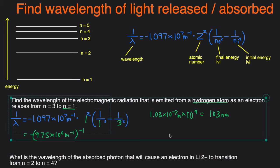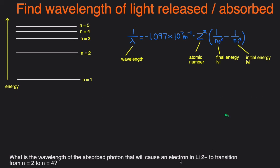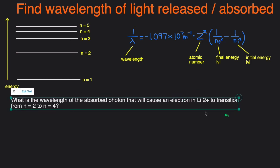Let's take a look at another example. In this example we're asked to solve for the wavelength of the absorbed photon, photon just means light, that will cause an electron in lithium 2+ to go from n equals 2 to n equals 4.